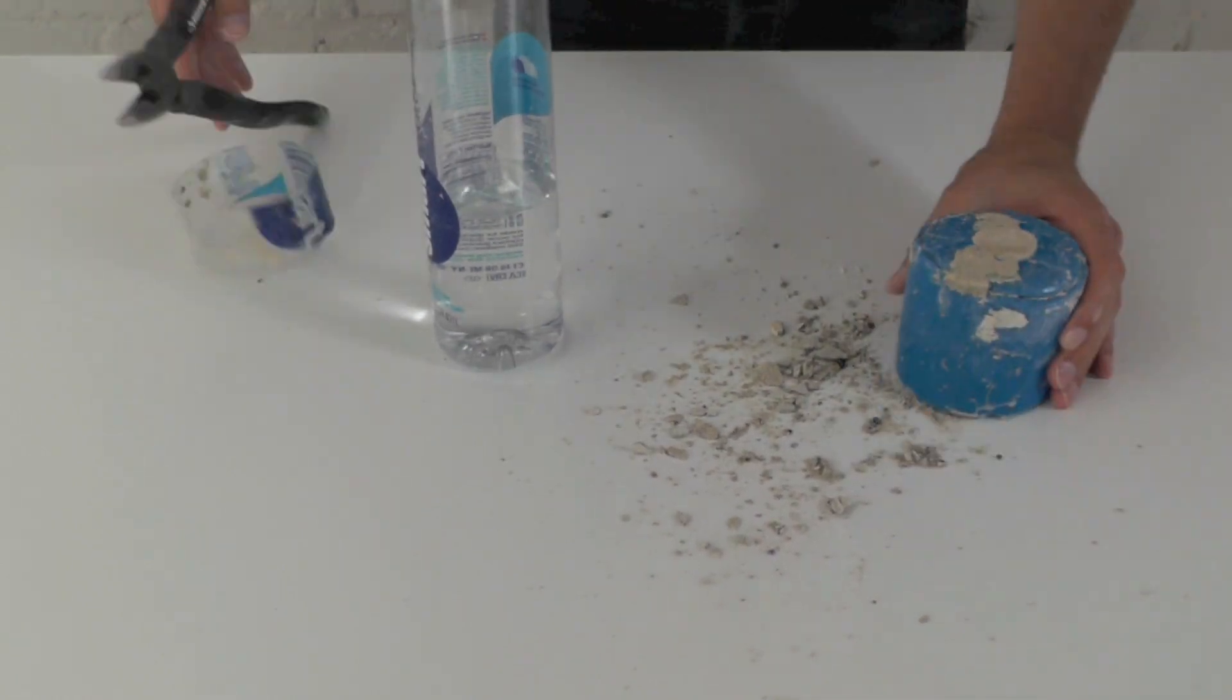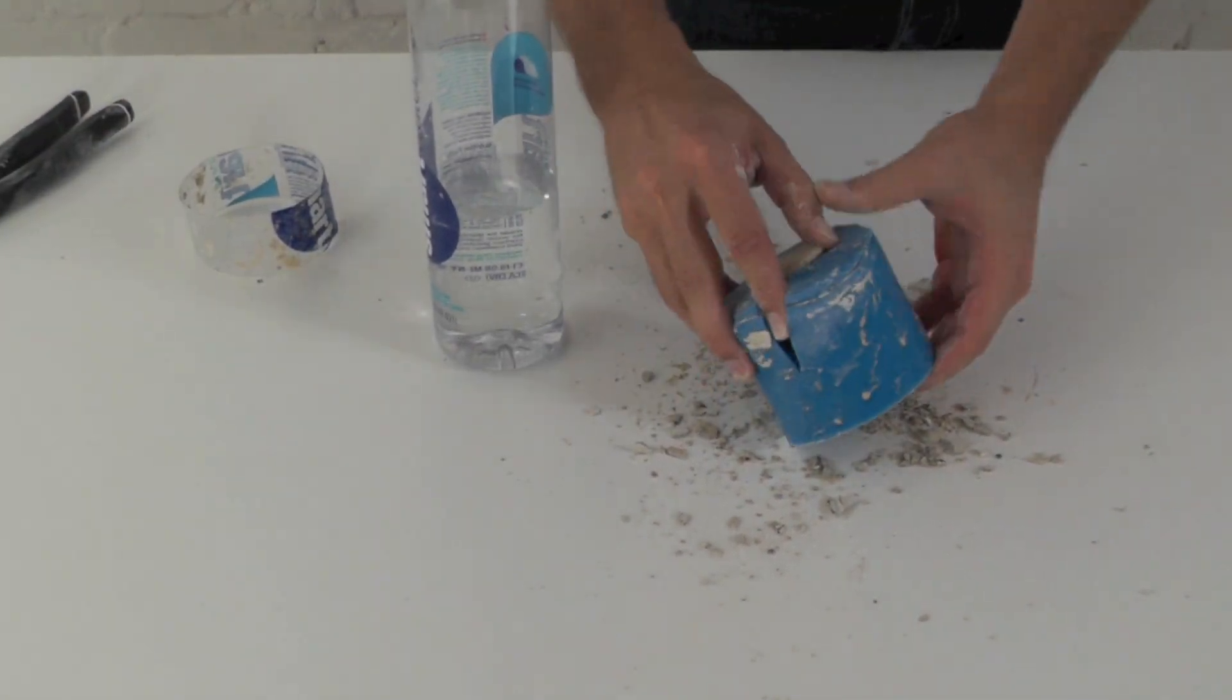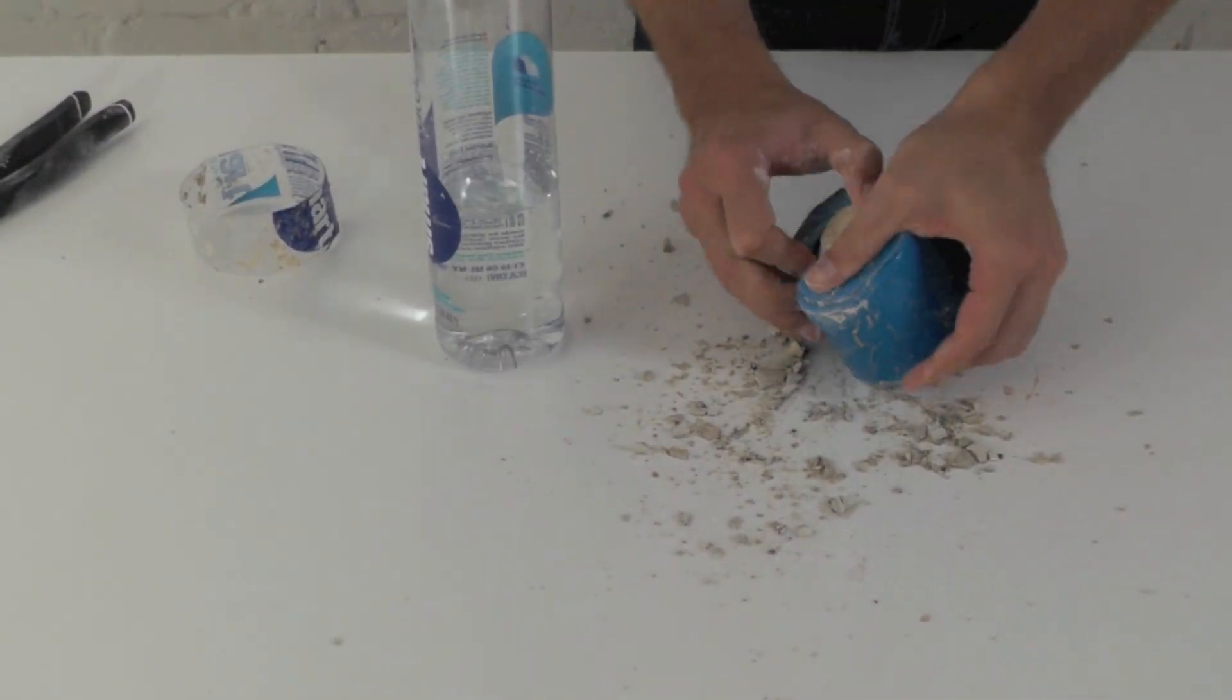Once the concrete is cured, use a pair of pliers to remove the plastic ring and then pull out the concrete copy.